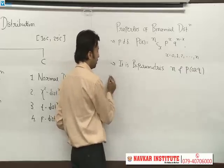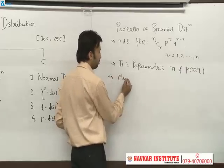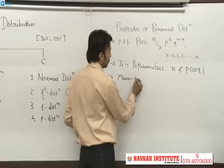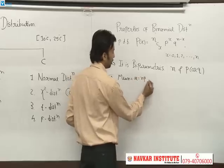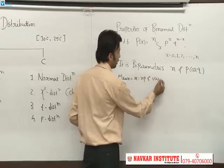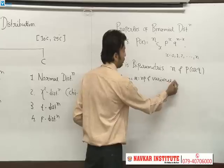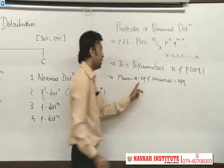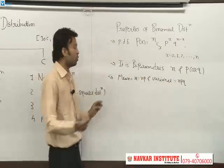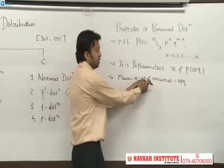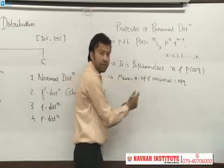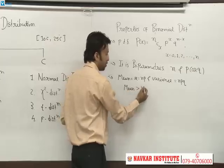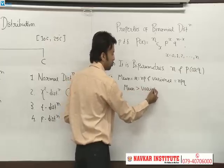The mean of binomial distribution is N·P, and the variance is N·P·Q. Since Q is always less than 1, N·P is always greater than N·P·Q, so the mean is always greater than the variance in this distribution. The standard deviation is the square root of N·P·Q.